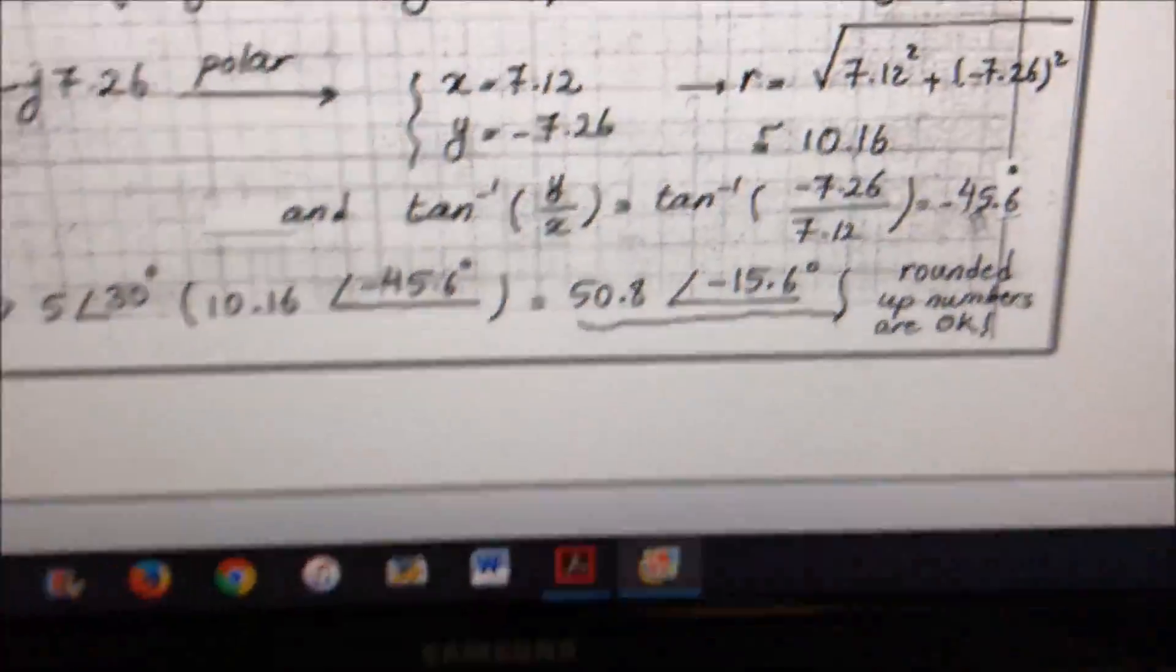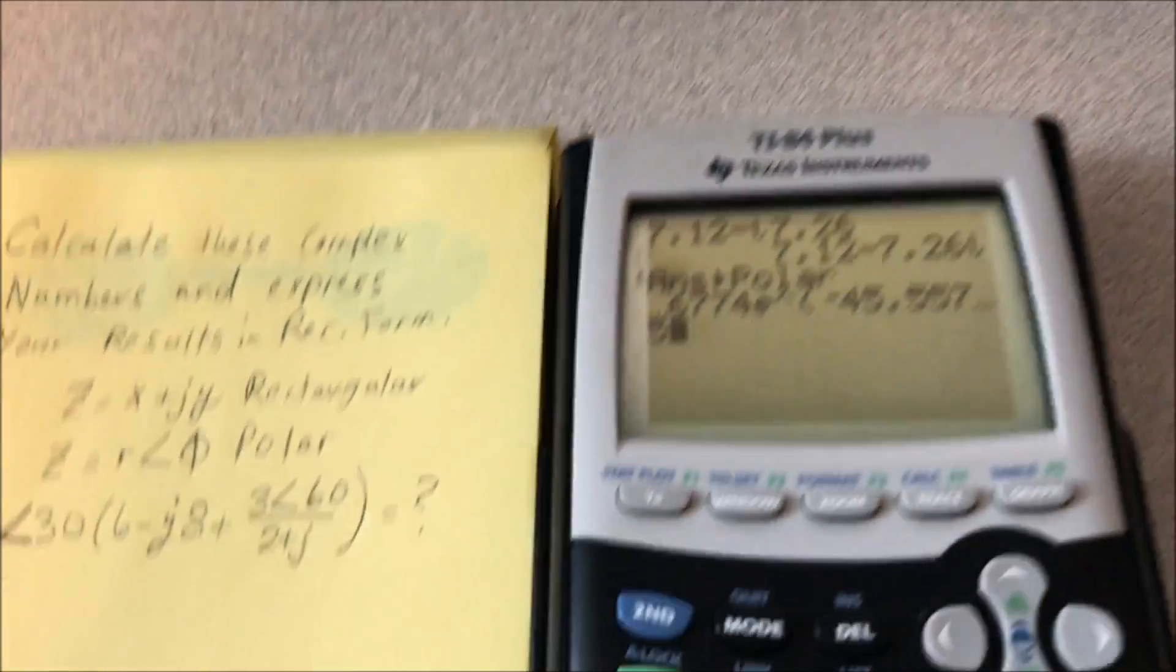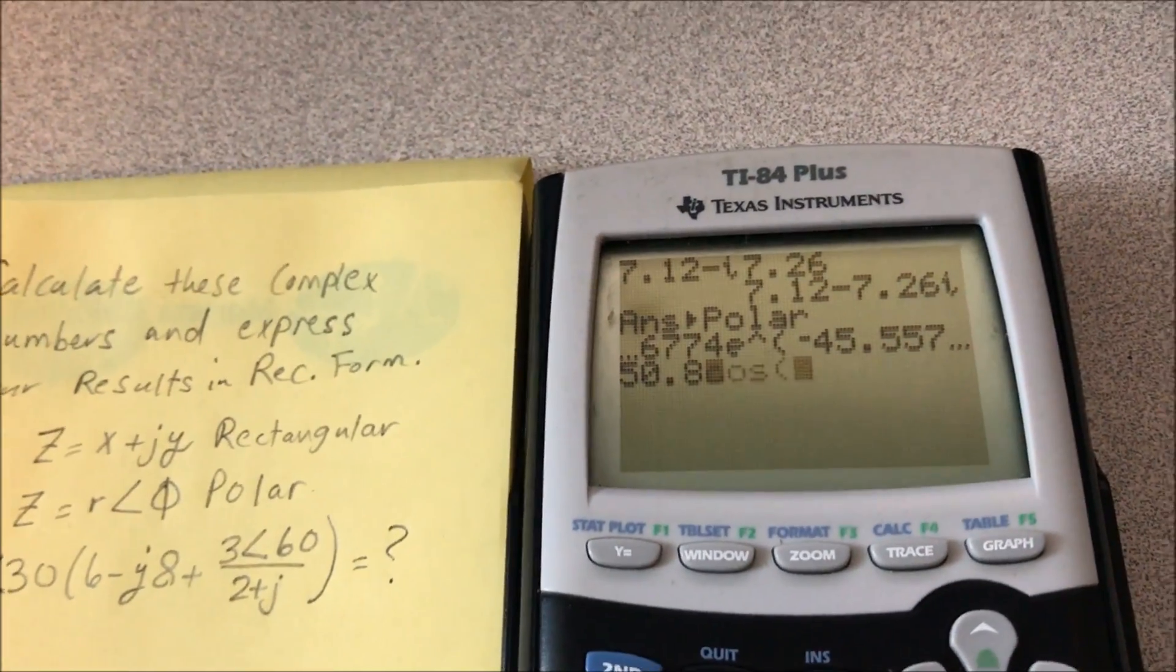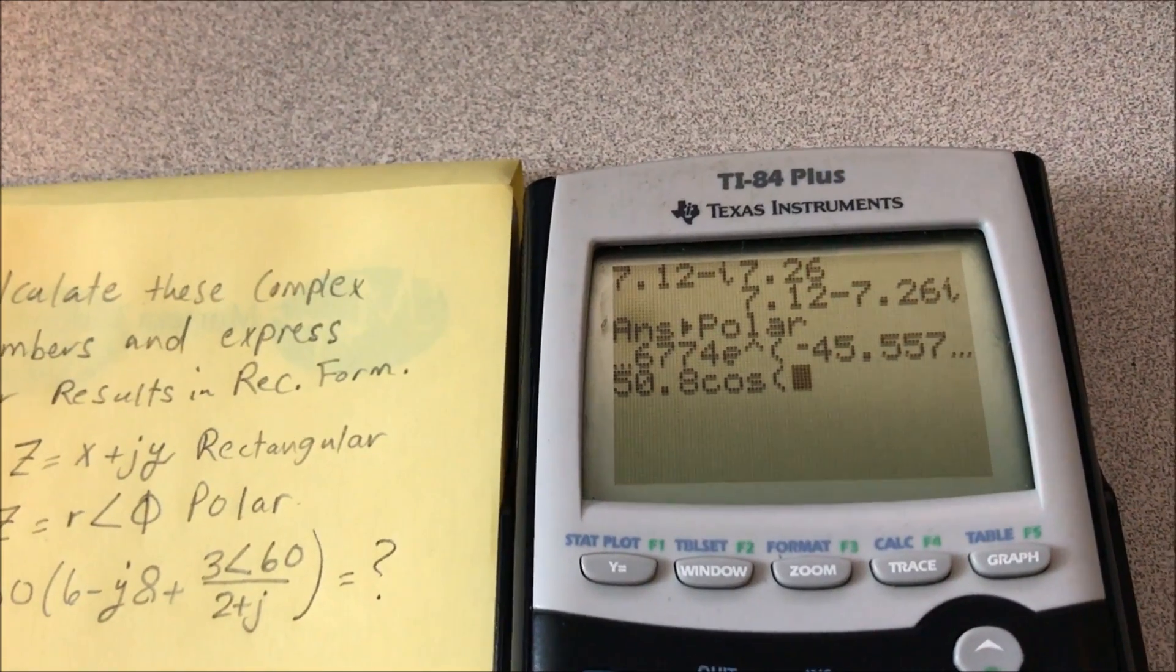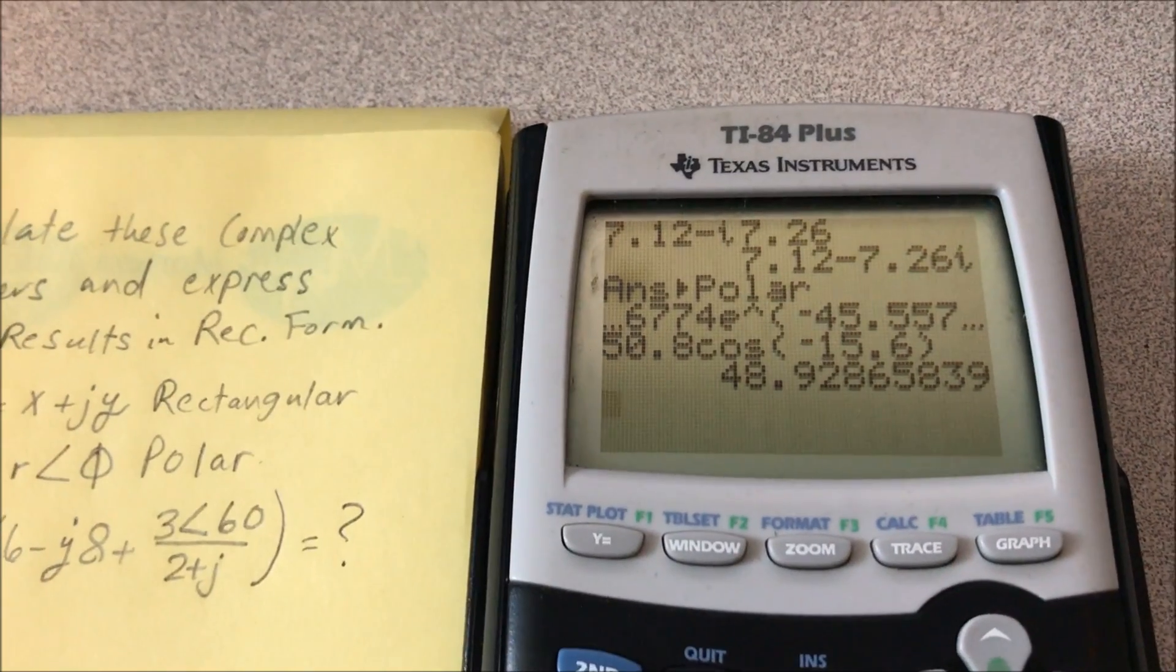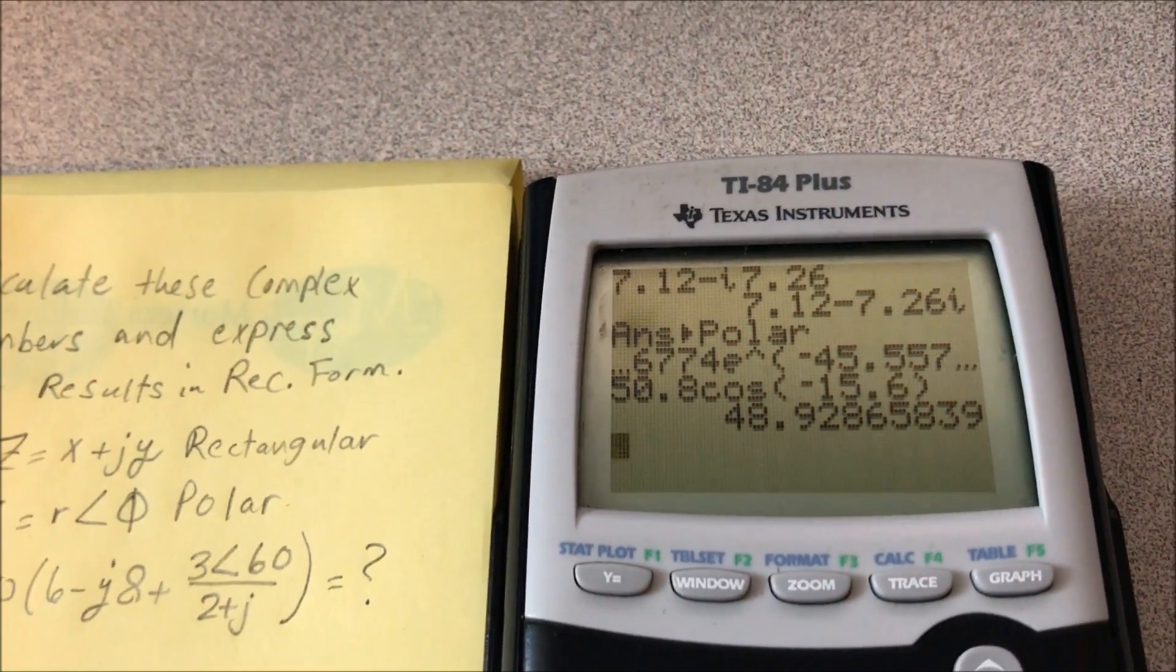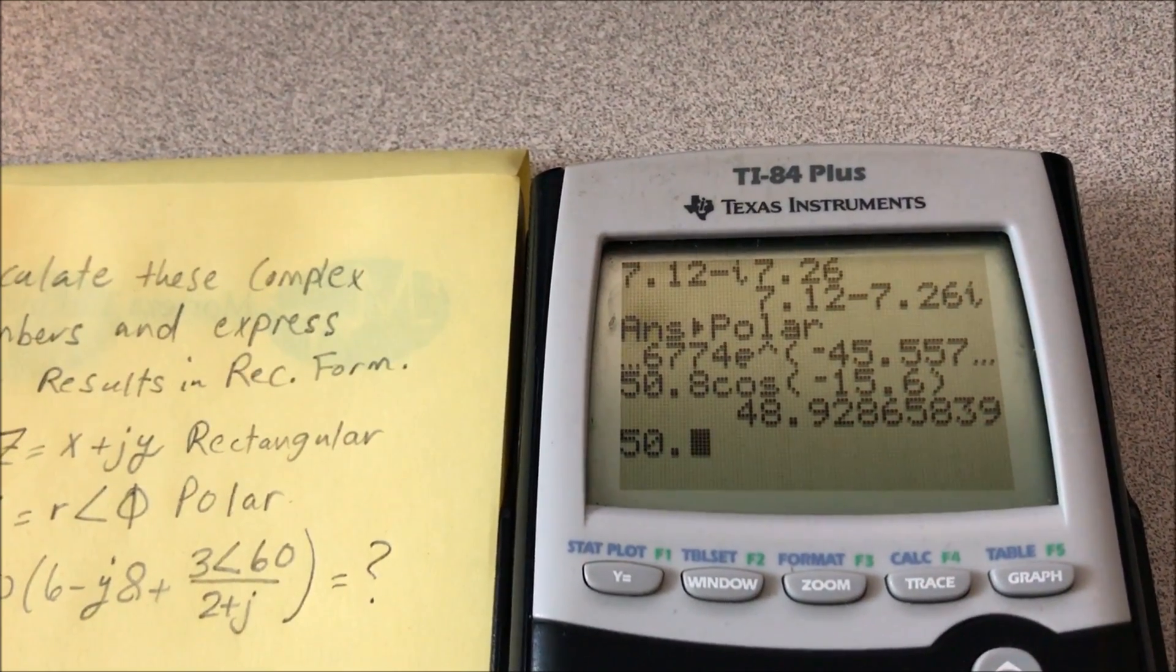If you want to turn it into rectangular, we do as we said: it would just be 50.8 cosine negative 15.6, that'll be your x, and you do 50.8...